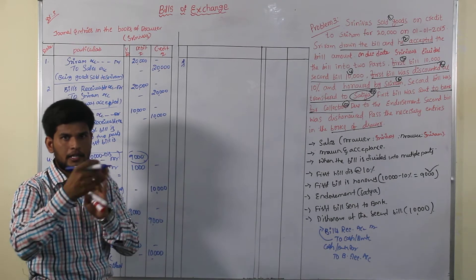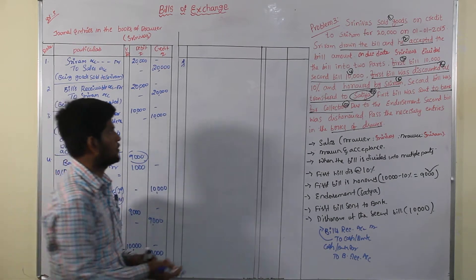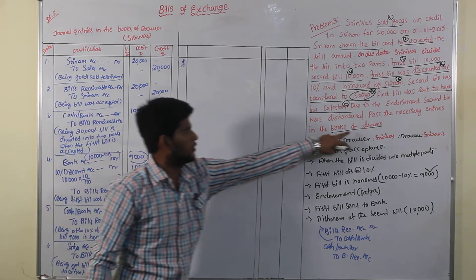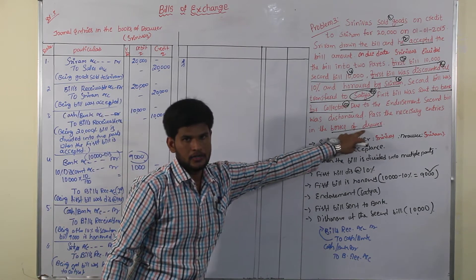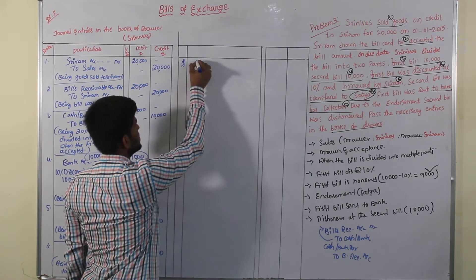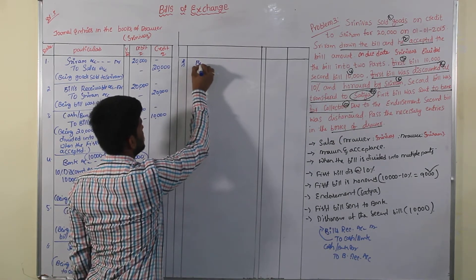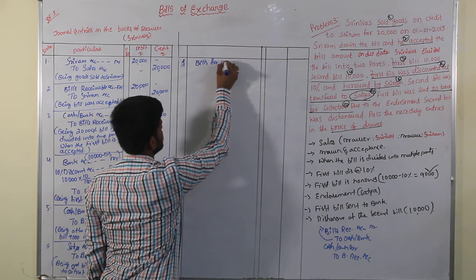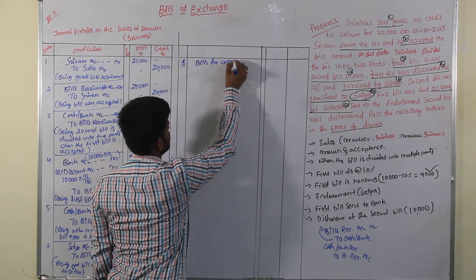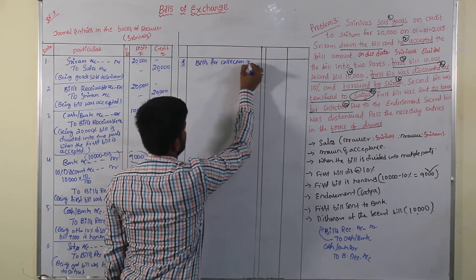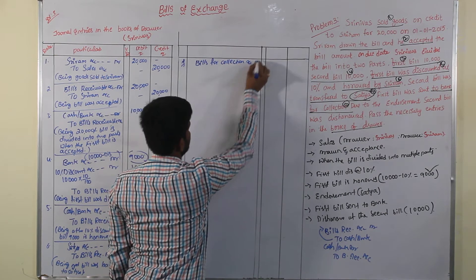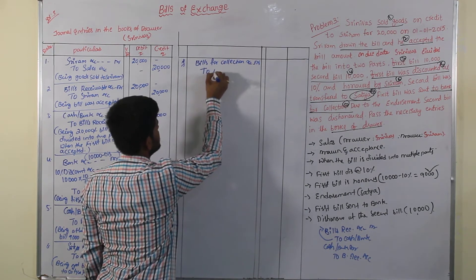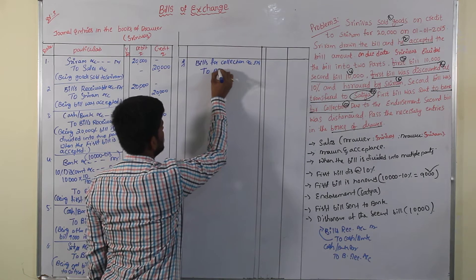In the seller's books I have to mention the buyer. But we are entering the books only for the drawer. So the entry is: Bills for Collection account Dr to Bills Receivable account.